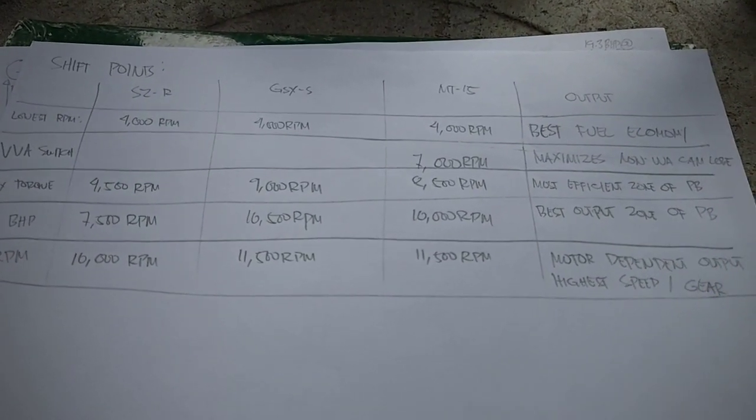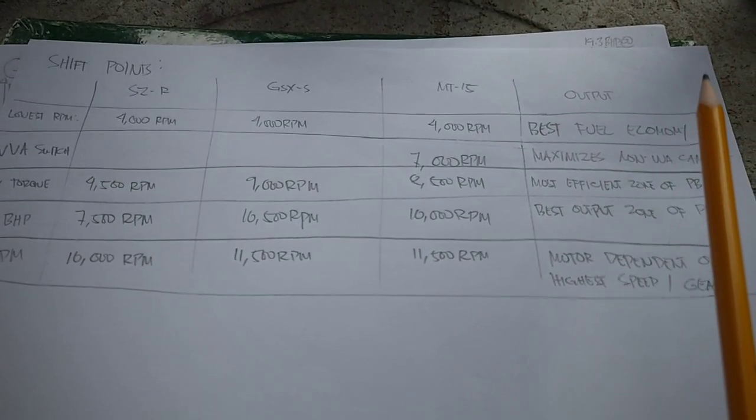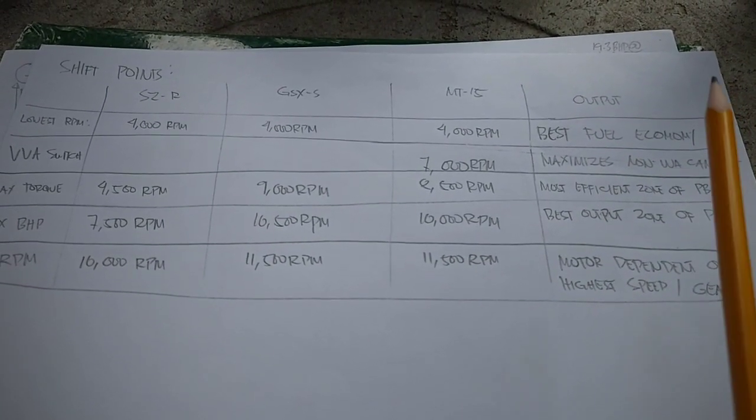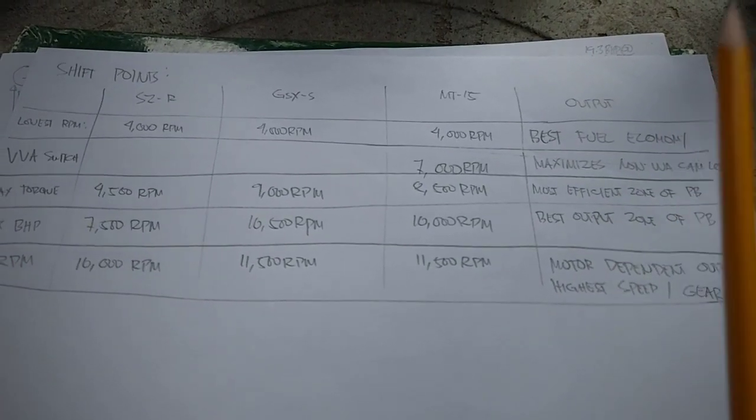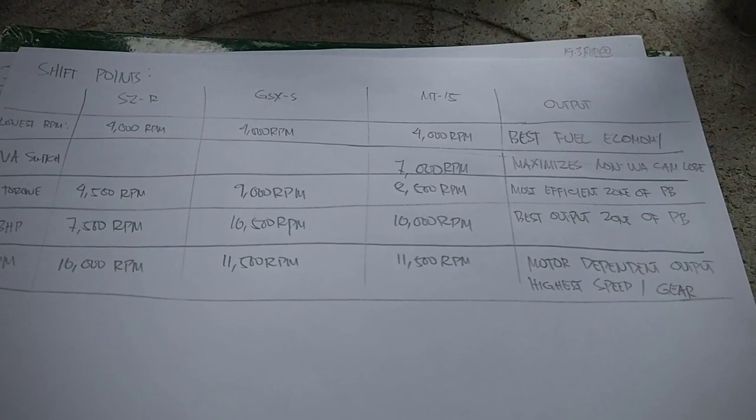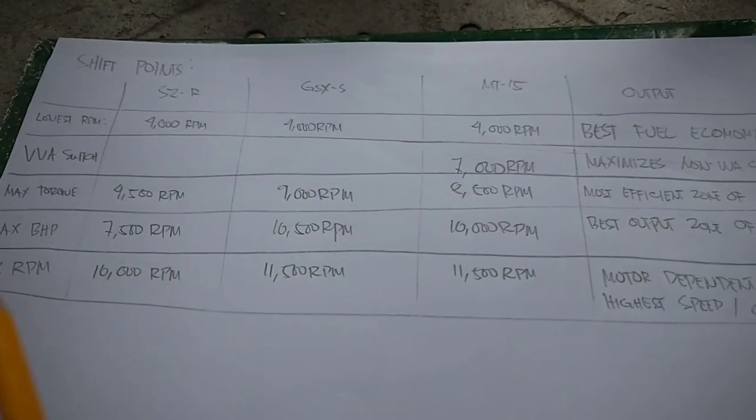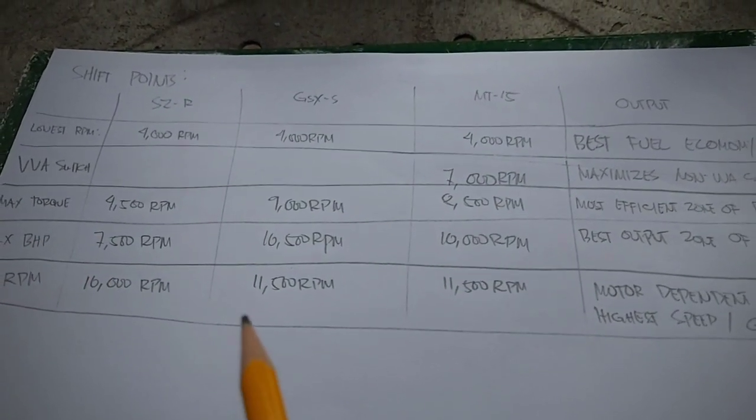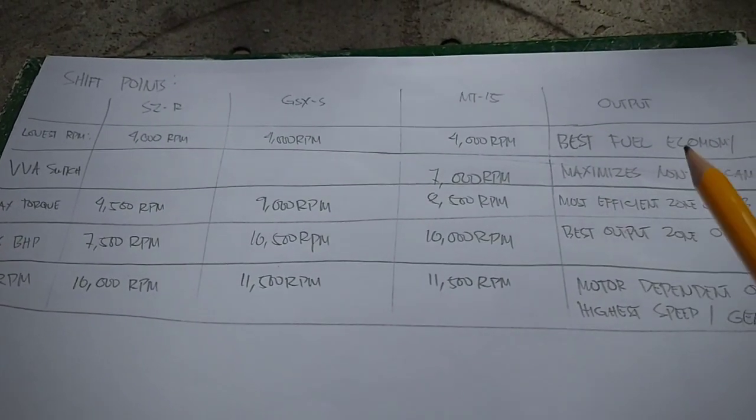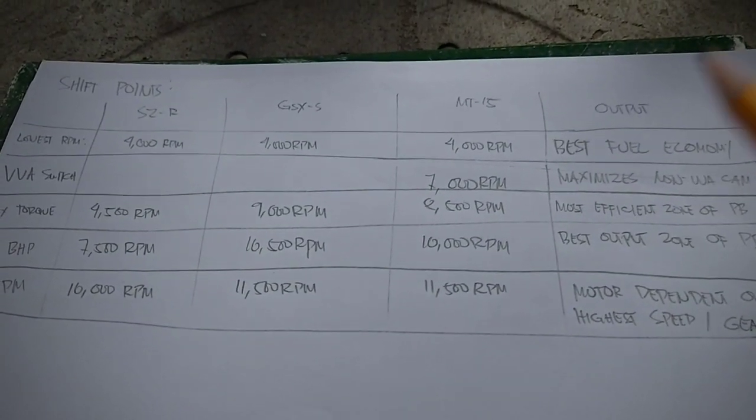So the lower the RPM, the more economic sa fuel, pero too low RPM means hindi siya makakasunog, hindi siya makaka-ignite ng mabuti. So sa lowest possible RPM, hindi ka humahatak, hindi ka mabilis, pero tipid na tipid ka sa gas.